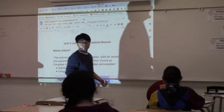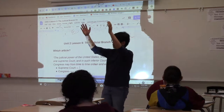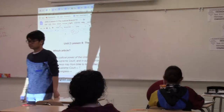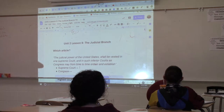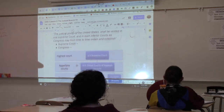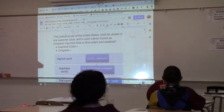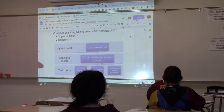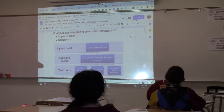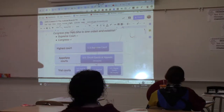Our federal court system has one Supreme Court and several lower courts. You have one Supreme Court, which is the highest court in the land, and below it are 13 appellate courts all over the United States, and then 94 district or trial courts all over the United States. The system is: if you fail at one level, you can appeal your case to a higher court, and then if you fail there, you can appeal to the U.S. Supreme Court.